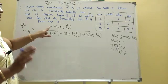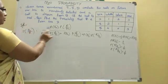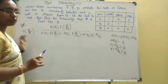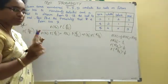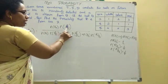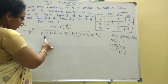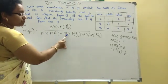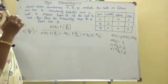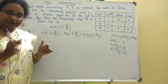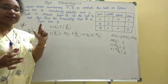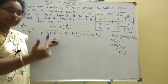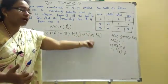P(B2 | R) — using Bayes theorem formula. Numerator: P(B2) into P(R | B2). Denominator: P(B1) into P(R | B1), plus P(B2) into P(R | B2), plus P(B3) into P(R | B3). The B terms cancel inside each product, giving us the formula of the Bayes theorem.